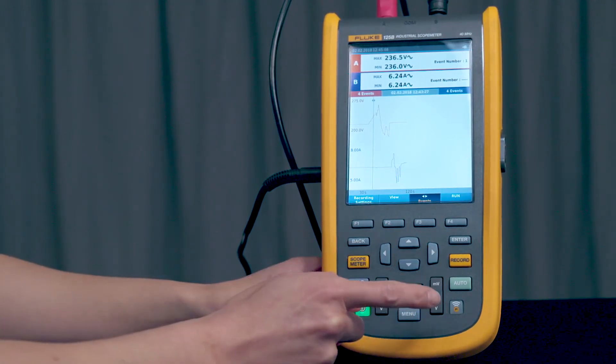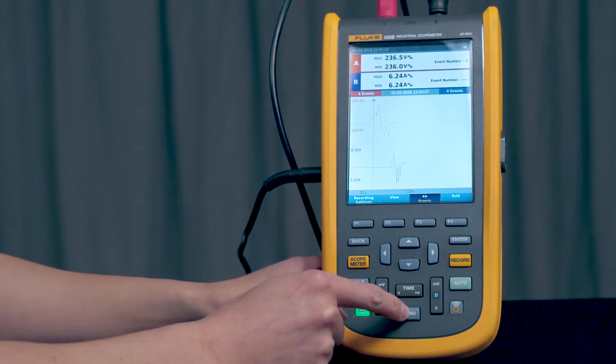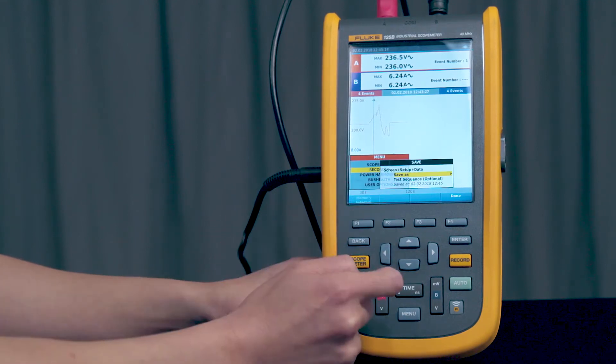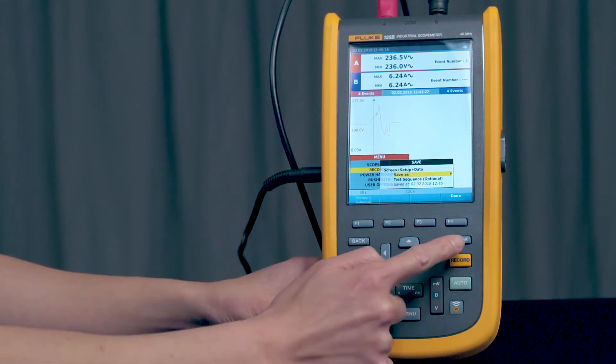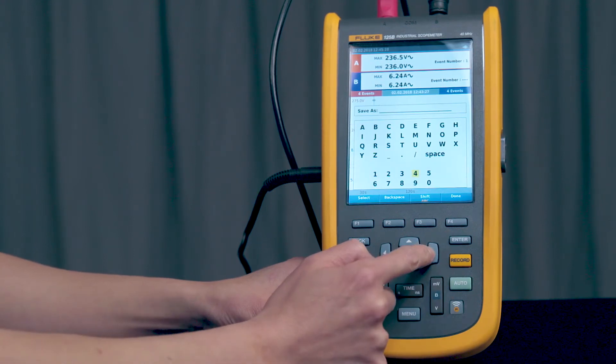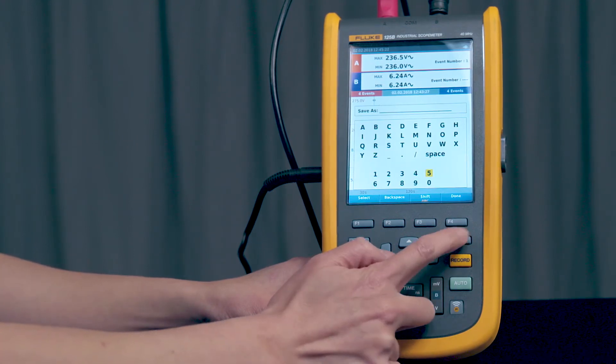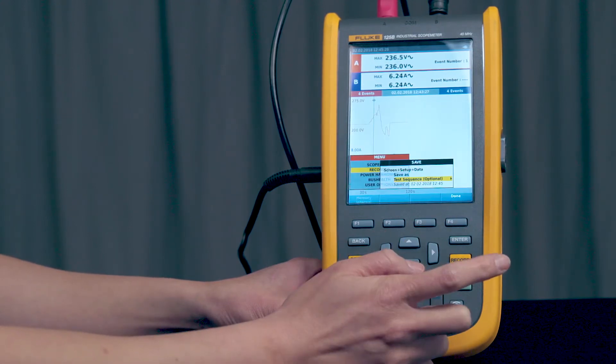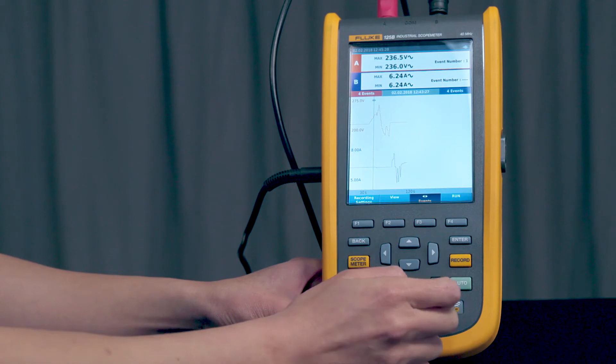You can also save the data. So save it by pressing the menu key. And then F2 for save. And follow the prompts. Save as. Enter. Enter. And let's save this as test number five. So let's go Enter. And F4 for done. F4 for done.